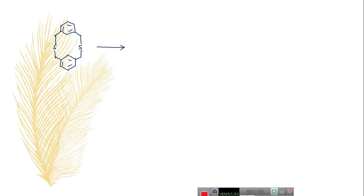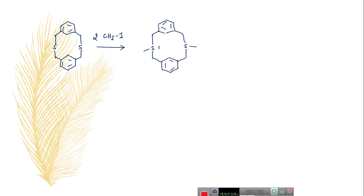We start the reaction with the sulfide. This sulfide, when you treat with two moles of alkyl halide — for example, methyl iodide — undergoes nucleophilic substitution reaction and gives you a sulfonium ion, stabilized by a counter ion. Now treat this sulfonium ion with a base, which abstracts the protons and produces the vicinal ionic intermediate called a sulfur ylide.